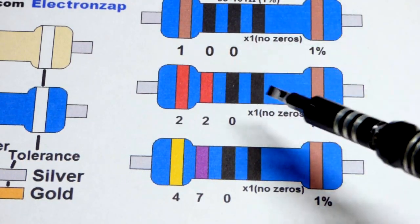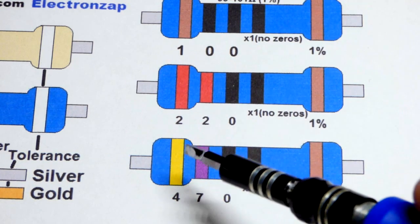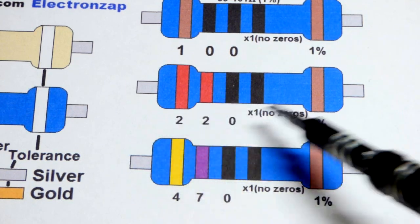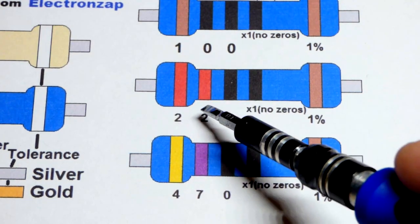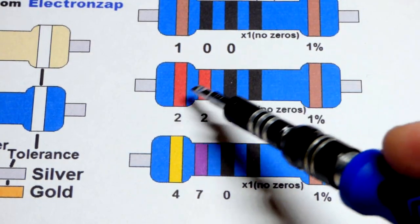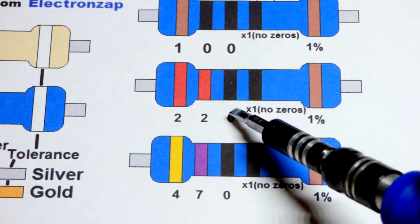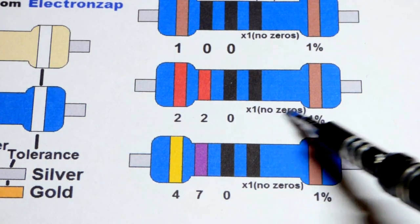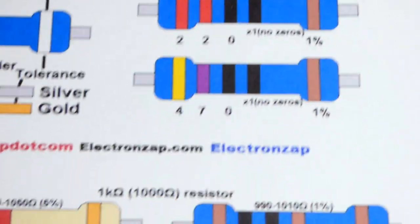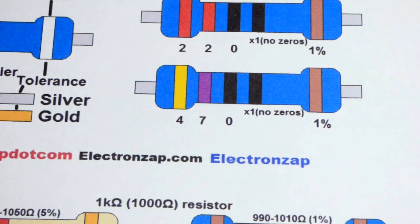Now 220, we already looked at red is 2. And then, so that's the other digit. We know that's the multiplier there because it's brown. And then black, 0. And then the multiplier again, it's 0 zeros or times 1 according to some tables.